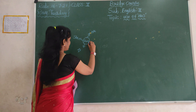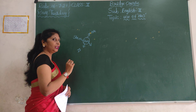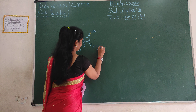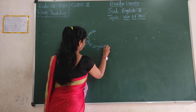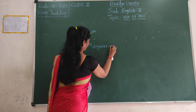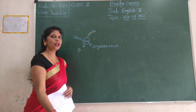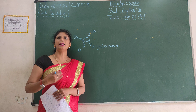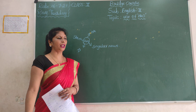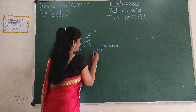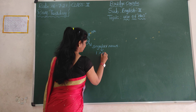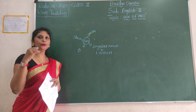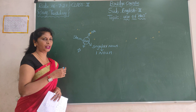We use 'has' for a singular noun. What is a noun, children? A noun is the name of a person, place, animal, or thing. A singular noun means one noun — any one noun. We use 'has'.